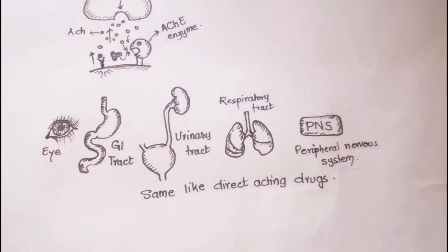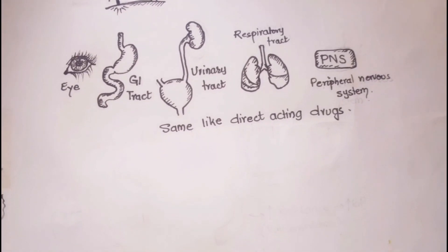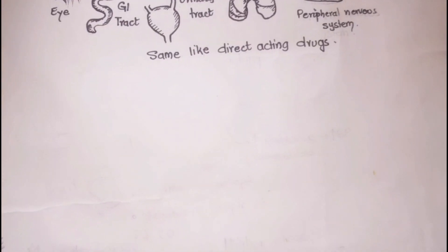The other systems on which the effects are different from that of direct-acting drugs include cardiovascular system, central nervous system, and neuromuscular junctions.